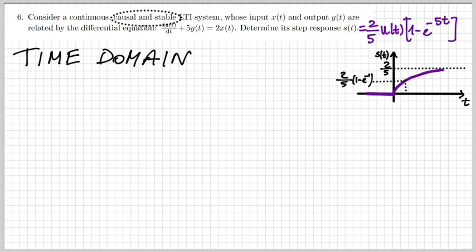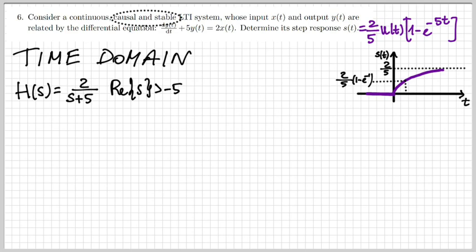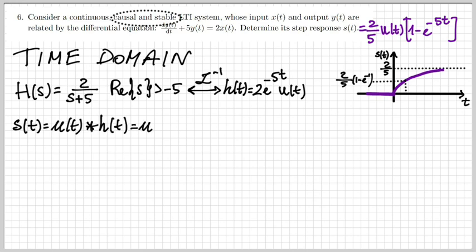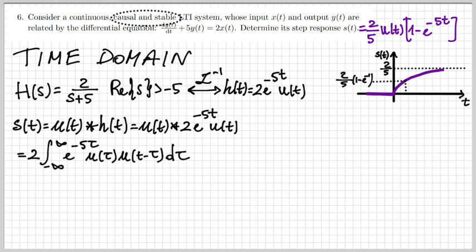I could also find the step response by working in the time domain. Anti-transforming H(s) with its known ROC gives the impulse response H(t) = 2e^{-5t}u(t). Then S(t) = u(t) * H(t) = u(t) * 2e^{-5t}u(t). Using the definition of convolution, I take 2 outside and get the integral of e^{-5τ}u(τ) times u(t - τ) dτ.